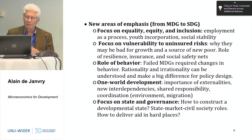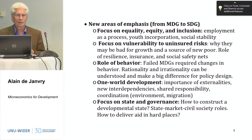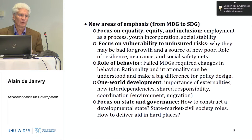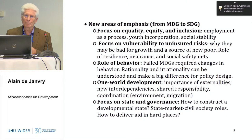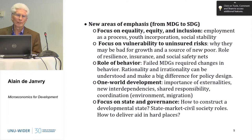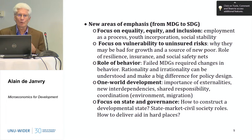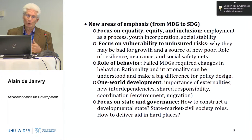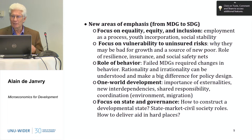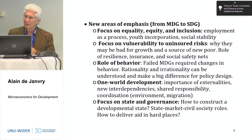Finally, the focus on state and governance made its way into the Sustainable Development Goals. Stiglitz insisted that there cannot be success without a strong developmental state. We know that most of the poor by 2030 are going to be located in failed state countries or post-conflict areas. We will have to learn how to deliver aid in hard places where we cannot count on institutions as easily as in China, Brazil, or Mexico.